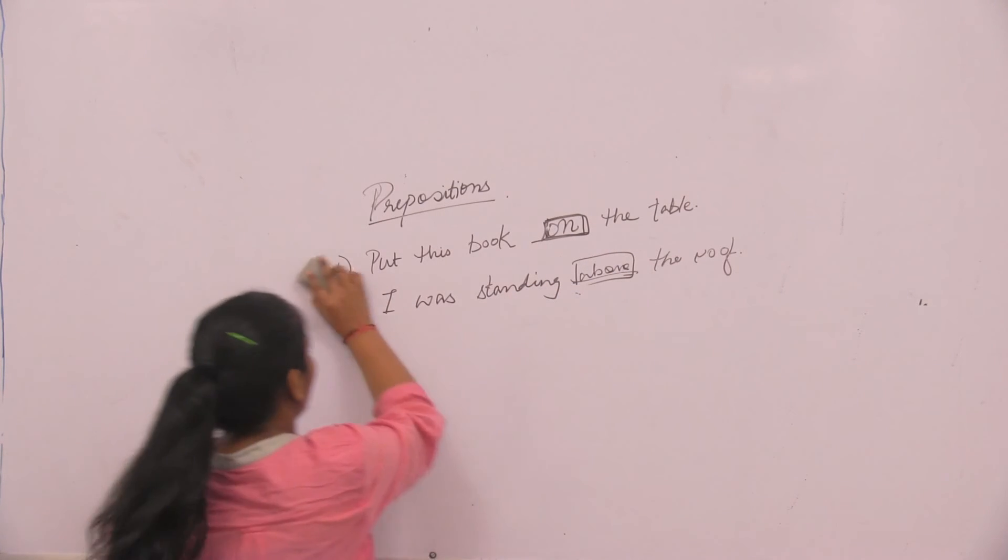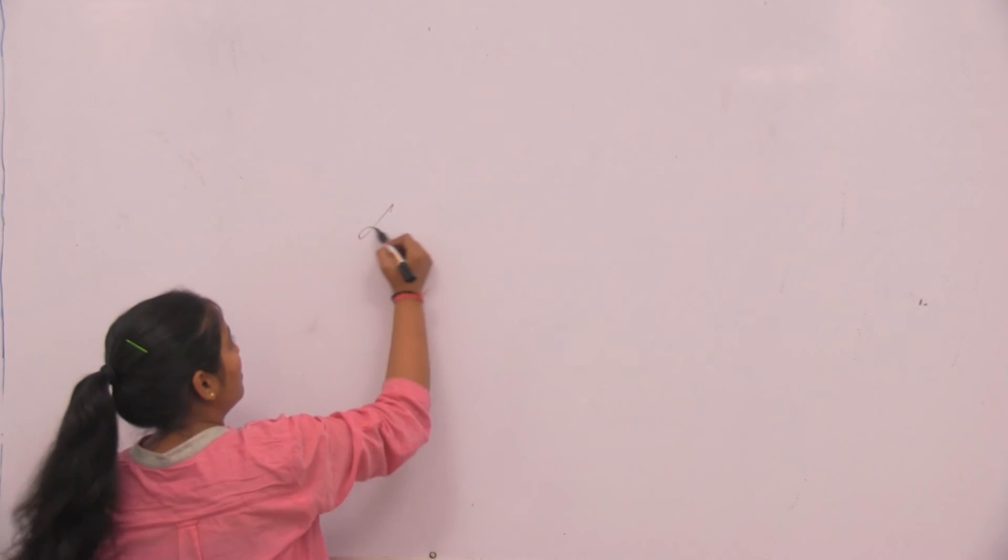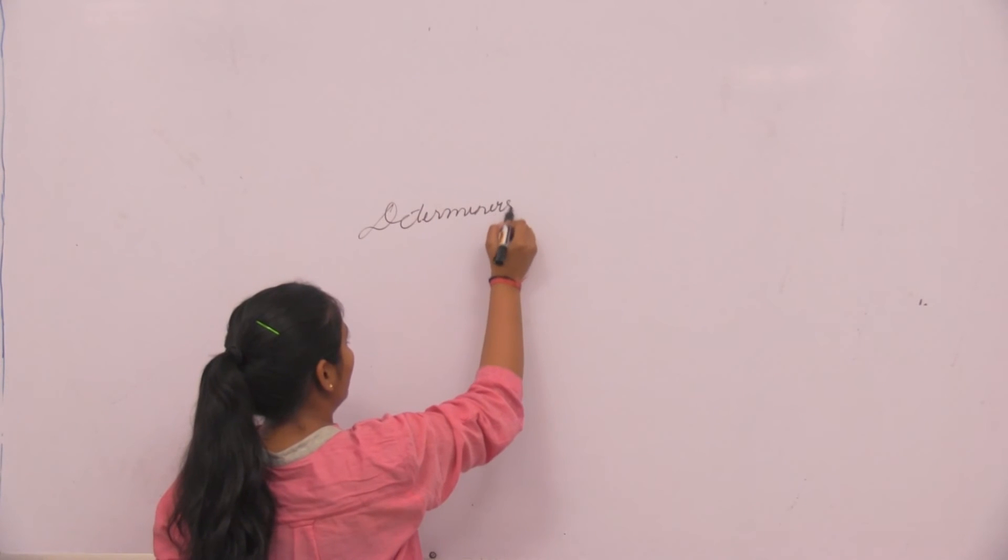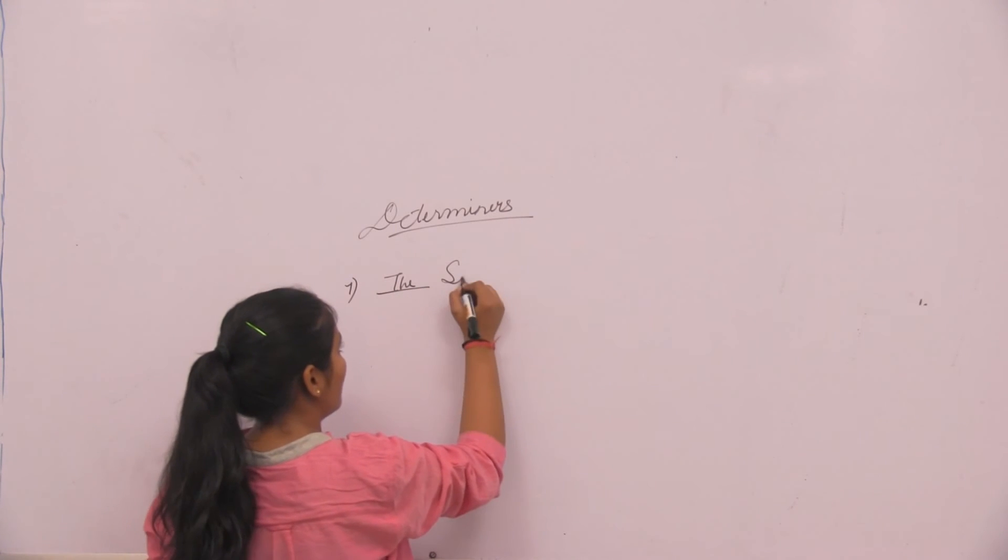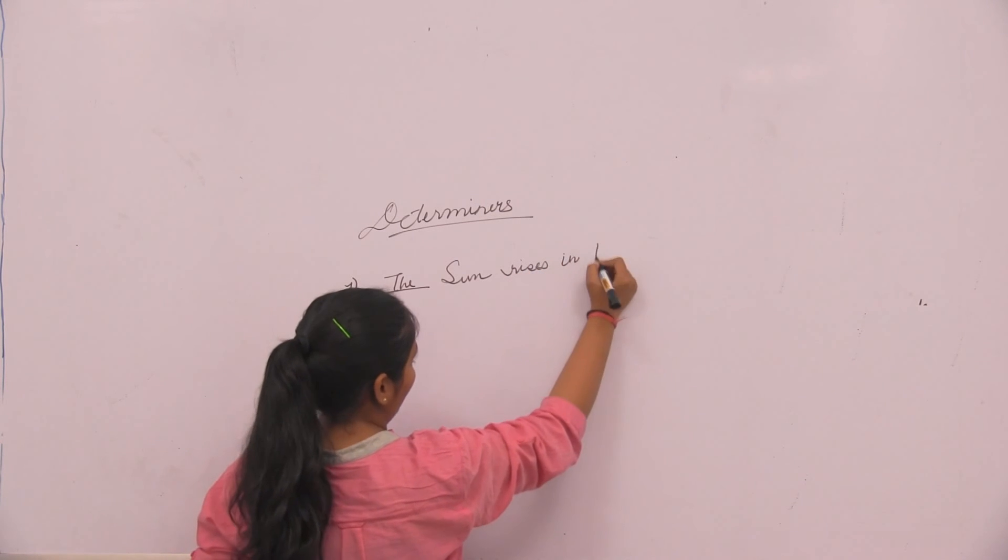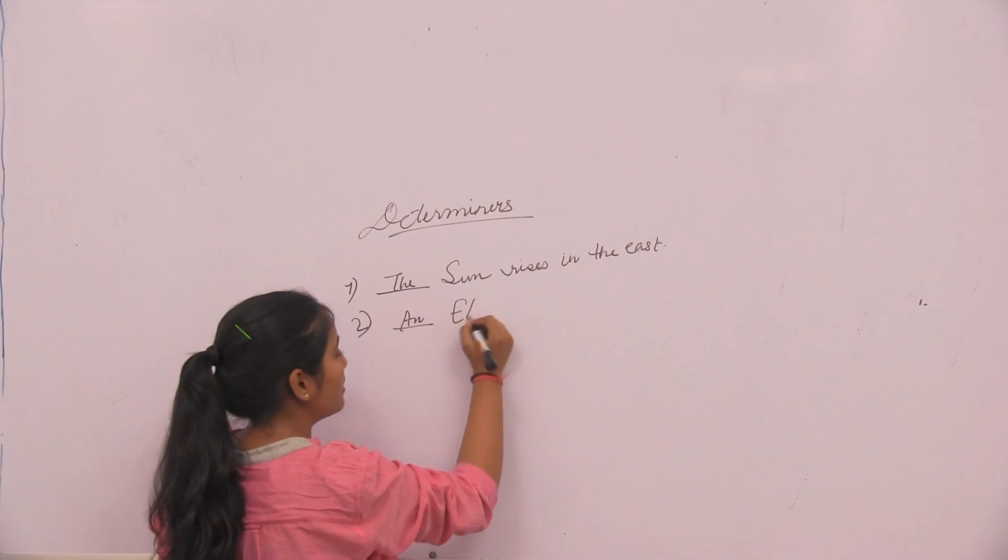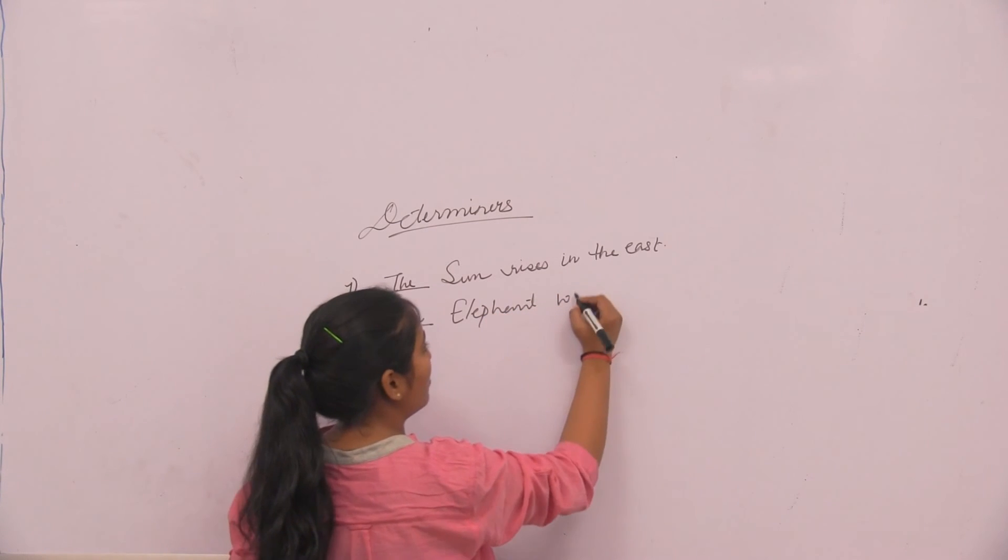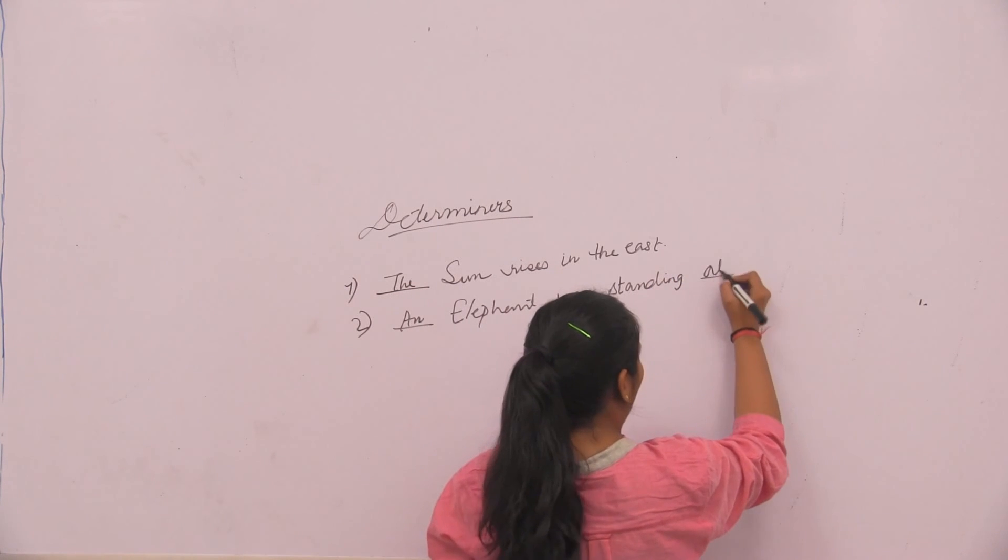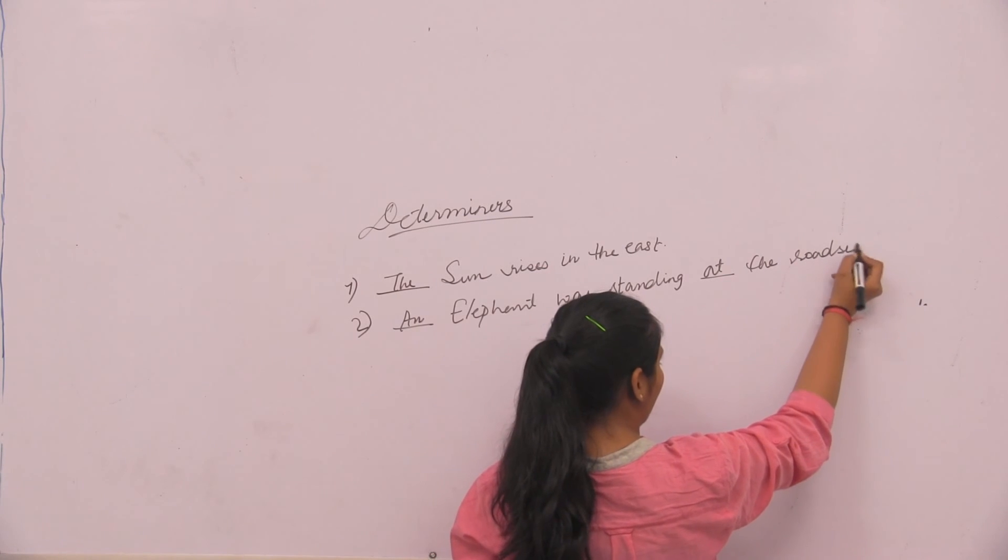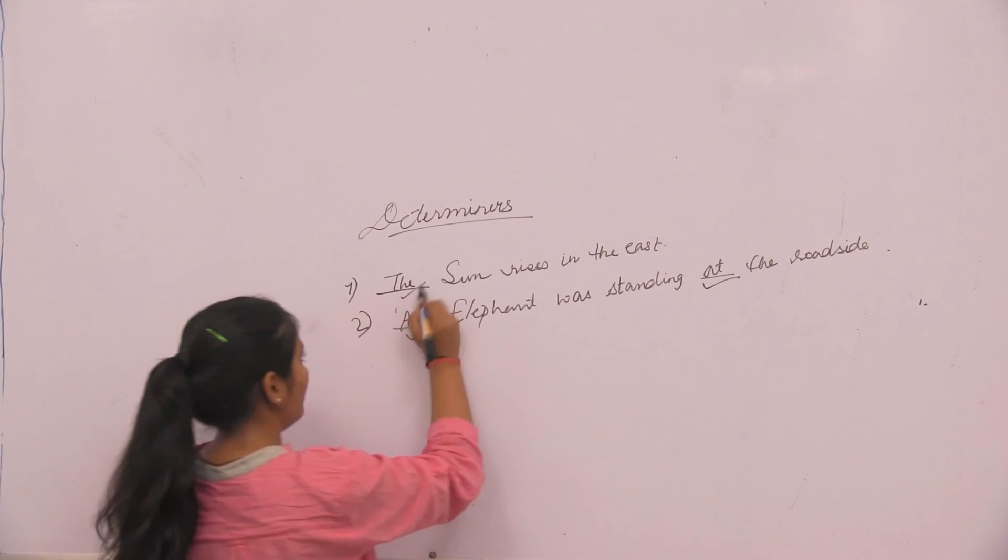Now determiners. Why same example? The sun rises in the east and an elephant was standing at the road side. So let's see here. The determiners are an, at, and the.